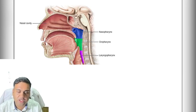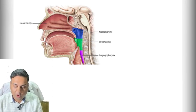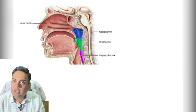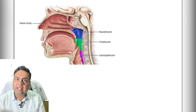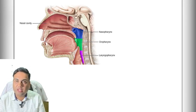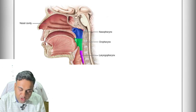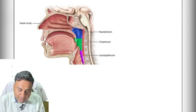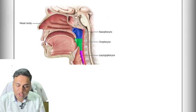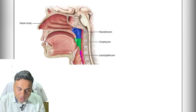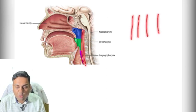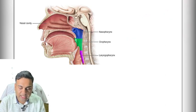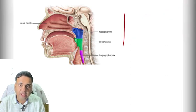Now we are going to discuss the mucosal layers of the pharynx. Between the pharyngeal mucosa and the vertebral body, there are nearly five layers. The first layer is the mucosa of the pharynx, and the second layer is the submucosa.